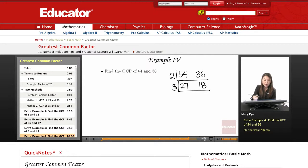27 divided by 3 is 9, 18 divided by 3 is 6.